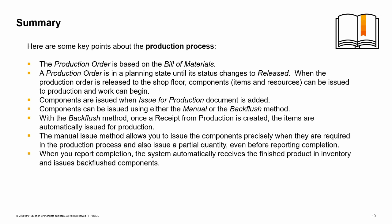Components can be issued using either the manual or the backflush method. With the backflush method, once a receipt from production is created, the items are automatically issued for production. The manual issue method allows you to issue the components precisely when they are required in the production process and also issue a partial quantity, even before reporting completion. When you report completion, the system automatically receives the finished product in inventory and issues backflushed components.